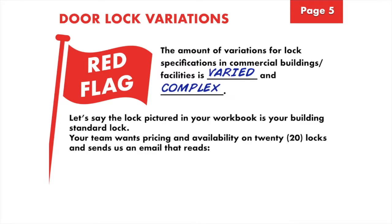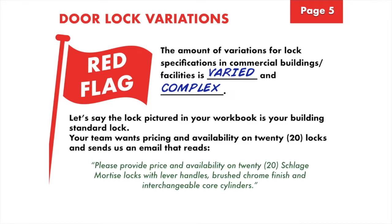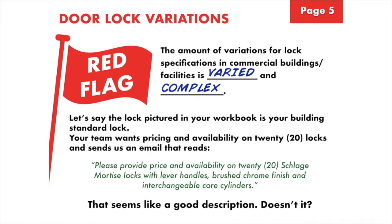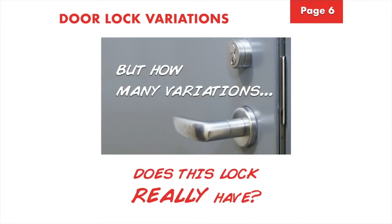Let's say the lock pictured in your workbook is your building standard lock and your team wants pricing and availability on 20 locks and sends us an email that reads: 'Please provide price and availability on 20 Schlage Modus locks with lever handles, brushed chrome finish, and interchangeable core cylinders.' Well, that seems like a pretty good description, doesn't it? But how many variations does this lock really have?